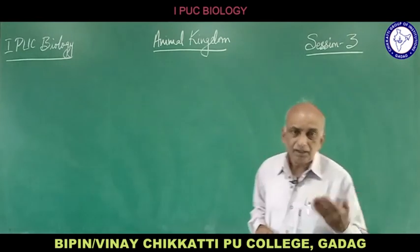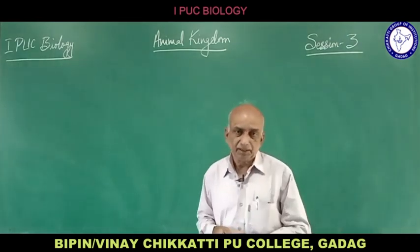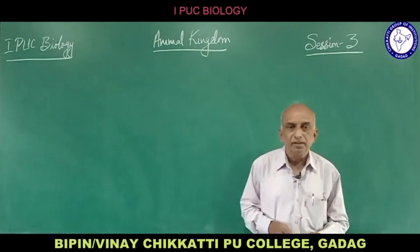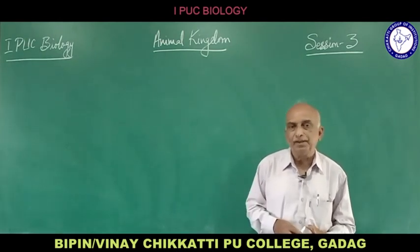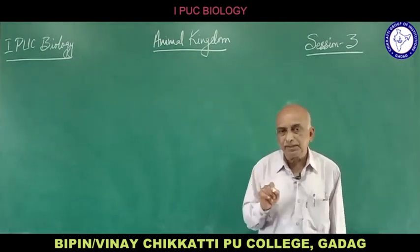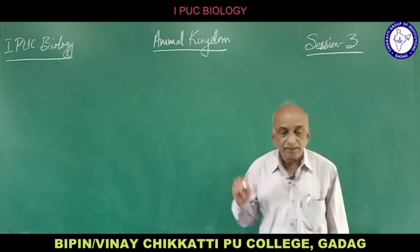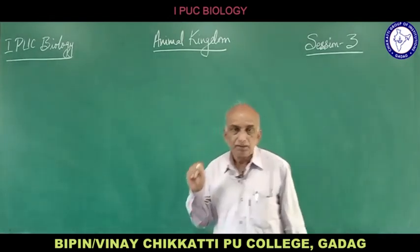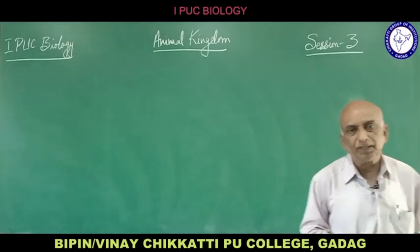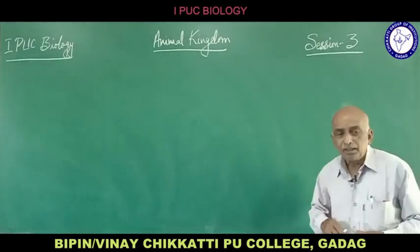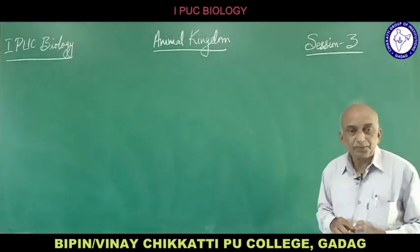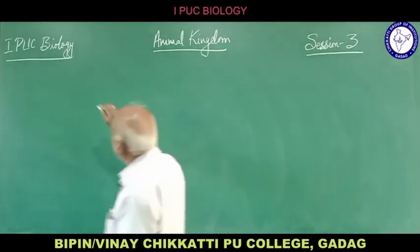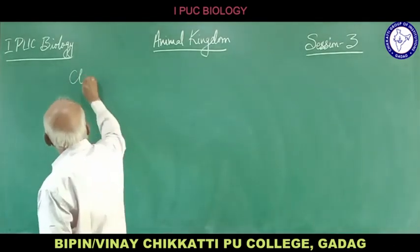In Chondrichthyes the scales are placoid; in bony fish they are ctenoid or cycloid. The caudal fin in bony fishes is homocercal — equal in size — which is another difference between cartilaginous and bony fishes.